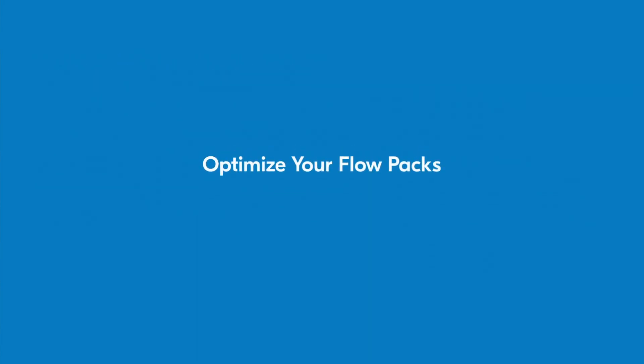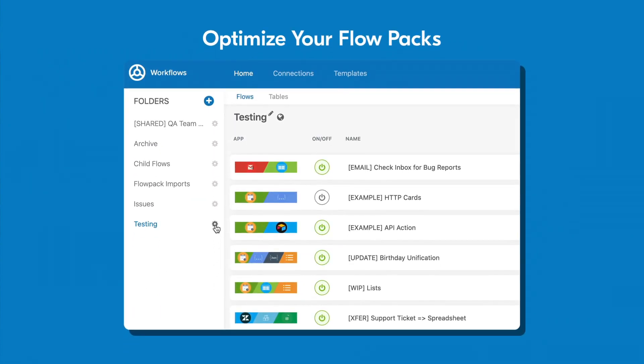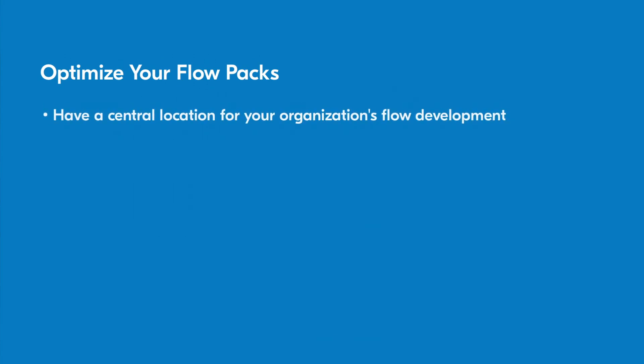If you're working as part of a team across multiple organizations, flow packs are an amazing way to share your work and quickly migrate from one organization to another. If your organization has multiple instances for workflows, you should have a single source of truth where your team develops them. This way everything is created and tested in a central location, and these flows can be used as templates to be deployed and set up in other instances.